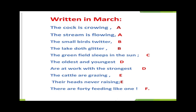Now comes the fifth line: 'The green field slips in the sun.' The word sun has no rhyming words in the poem, so we will mark it as C. Now let's come to the next lines — youngest and strongest. Again they are similar in sound, so we will mark them with the letter D. Then comes the next lines — grazing and raising. Again they are similar in sound, so we will mark them with the letter E. And the last word, one, has no rhyming word in the paragraph, so we will label it alone with the letter F.